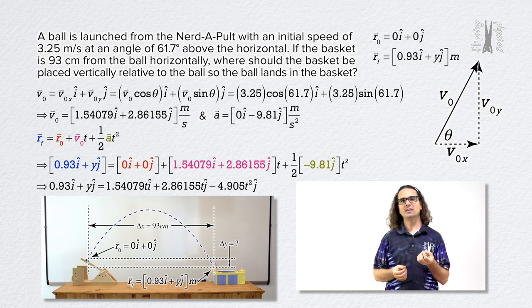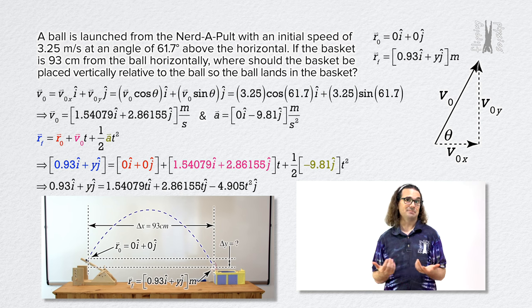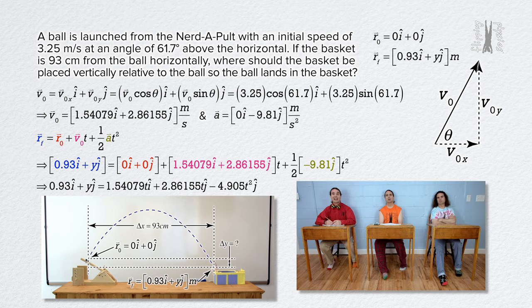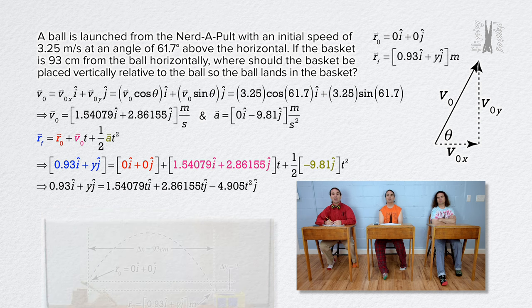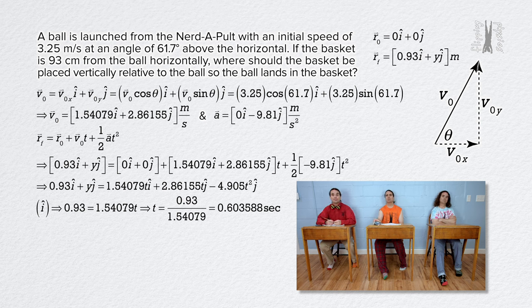Bobby, please isolate all of the x direction terms and see what we can accomplish with that. Sure. Isolating all of the terms which have a unit vector i in them gives us 0.93 equals 1.54079 times time. Oh, okay, we can solve for time. Time equals 0.93 divided by 1.54079 or 0.603588 seconds.